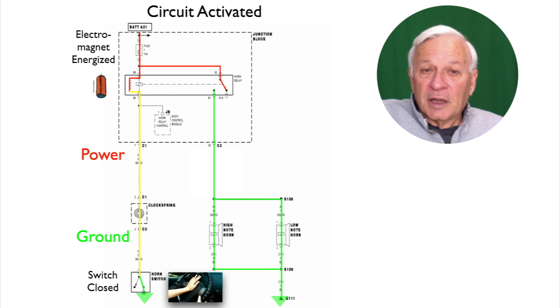The coil inside the relay is a resistance load, so that's where power meets ground and the coil energizes and becomes an electromagnet.